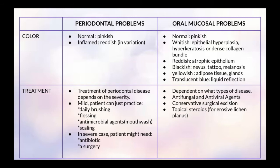Lastly, to differentiate by treatment: for periodontal problems, treatment varies depending on severity. If mild, patients can practice daily brushing, flossing, and use of antimicrobial agents such as mouthwash to prevent dental plaque accumulation, and can also seek dental scaling. In severe cases, patients might need antibiotics or surgery. For oral mucosal problems, treatment depends on the type of lesion rather than severity. Antifungal or antiviral agents can be given, and sometimes conservative surgical excision has to be performed. There is also topical steroid usage in some cases like erosive lichen planus. That's all for the differences between periodontal and oral mucosal problems.